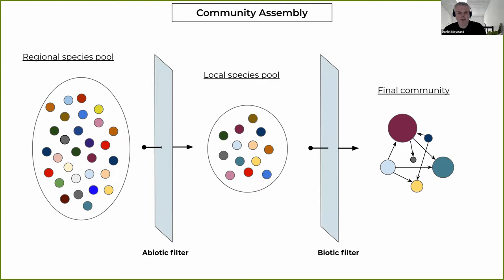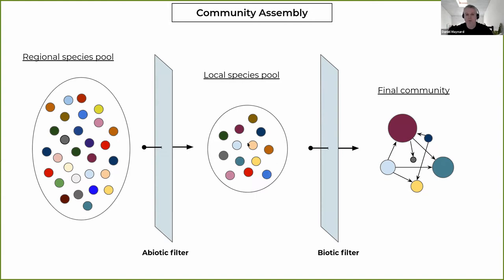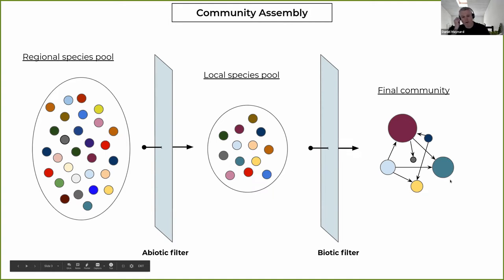When we think of community assembly, I'm sure many of you are familiar with this toy diagram. We often think of it through two different filters: an abiotic filter and a biotic filter. Generally, we're interested in whether, given a final community, we can infer the relative importance of these two filters. There's a regional species pool; species that can survive in a given location pass through the filter into the local species pool. They then interact in the biotic filter, more species get excluded, and we're left with the final abundance of species and a network of their interactions.